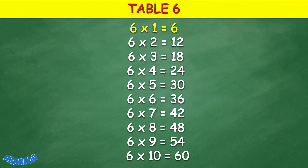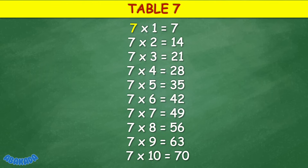Table 6: 6 times 1 equals 6, 6 times 2 equals 12, 6 times 3 equals 18, 6 times 4 equals 24, 6 times 5 equals 30, 6 times 6 equals 36, 6 times 7 equals 42, 6 times 8 equals 48, 6 times 9 equals 54, 6 times 10 equals 60.